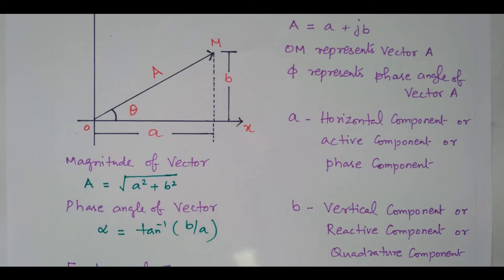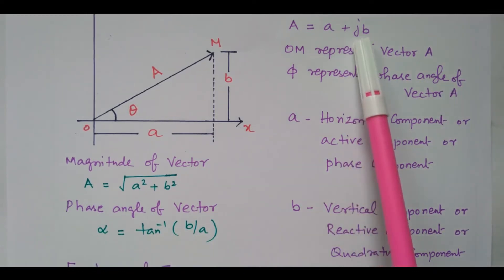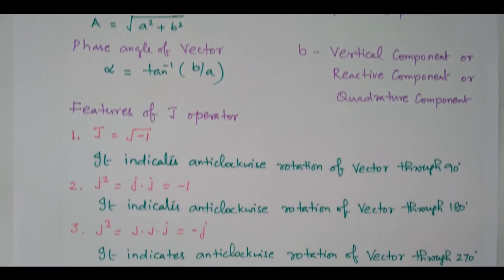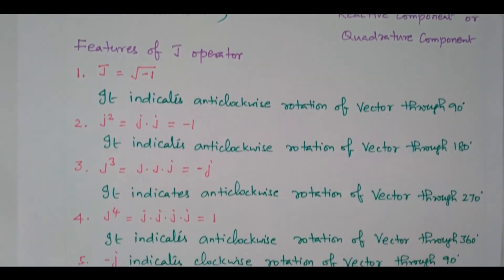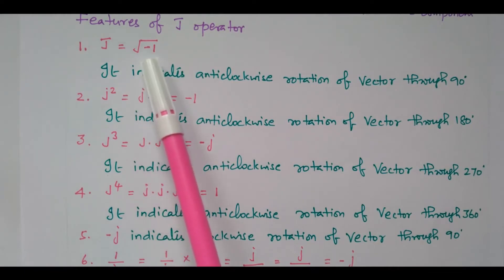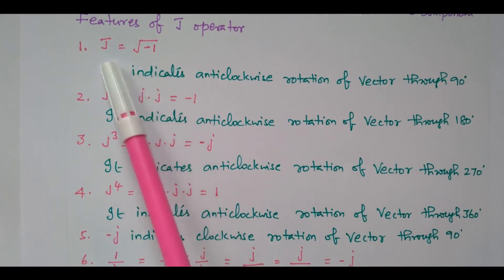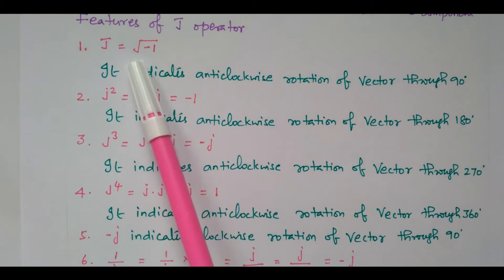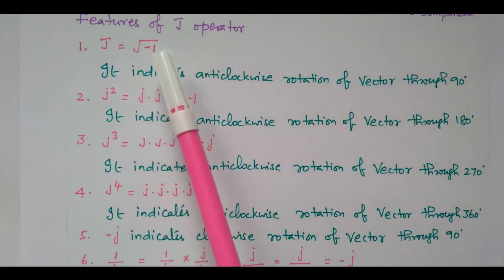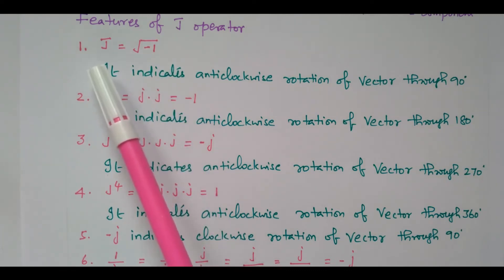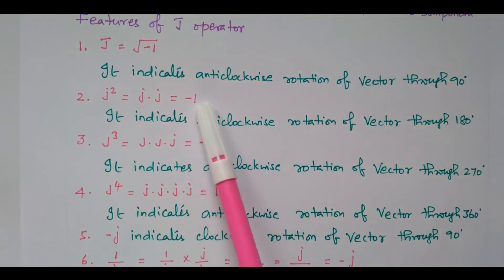Now we will see what is the J operator. Some more details about the J operator. J is equal to square root of minus 1. This is the value. The value of J is nothing but J equals square root of minus 1. If you square both sides, you will get J squared equal to minus 1.